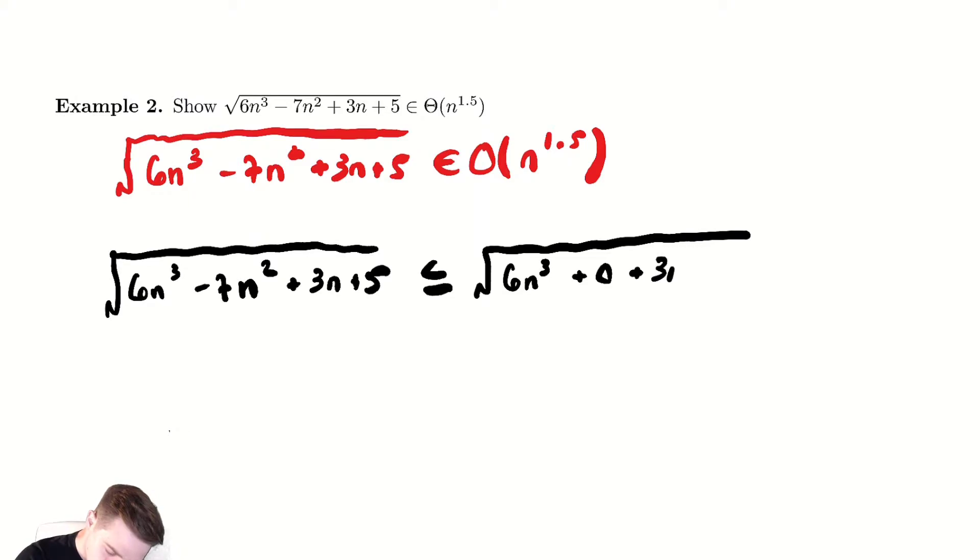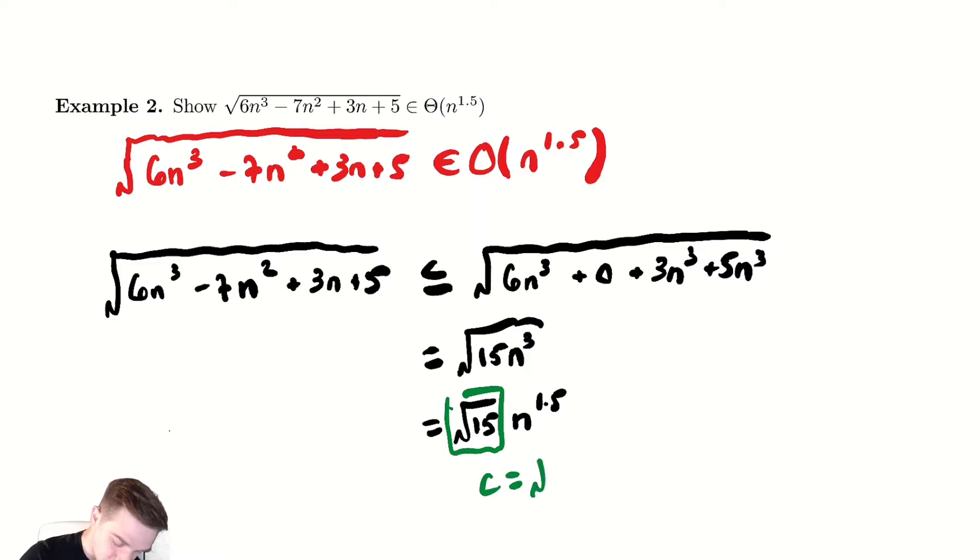Plus 3n cubed plus 5n cubed. This equals, collect together my like terms, I have 15n cubed under the radical. Now split it up again. And here, my choice of constant c is going to be radical 15.